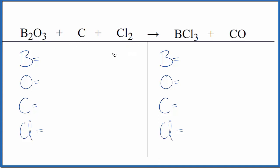So we'll start by counting the atoms up on each side of the equation. Two boron atoms, oxygen's three, just the one carbon, and then two chlorine atoms. Product side, we have one boron, one oxygen, one carbon, and then three chlorine atoms.